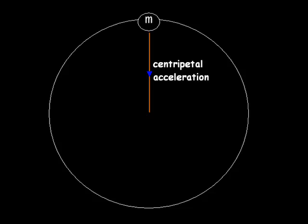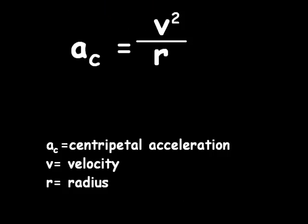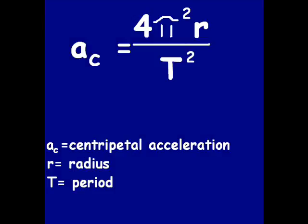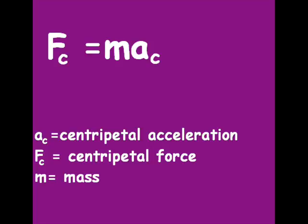and therefore has centripetal acceleration. The velocity vector of an object with a centripetal acceleration is always tangent to the circular path. Centripetal acceleration depends directly on the square of the object's speed and inversely on the radius of the circle. This can be seen in the equation: a_c = v² / r. Centripetal acceleration can also be expressed as a function of its period T as: a_c = 4π²r / T². A net force must be exerted towards the center of the circle to cause centripetal acceleration.